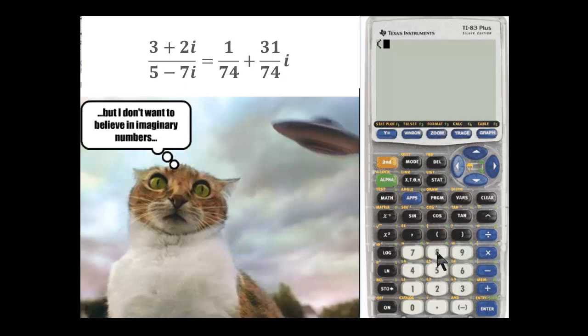Let's take 3 plus 2i, which is second dot, and then close the parentheses.